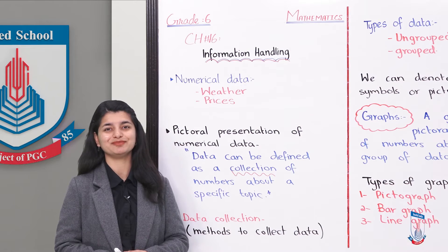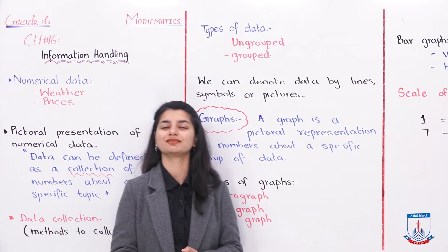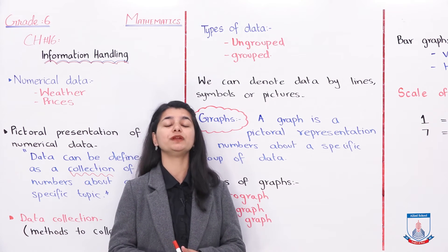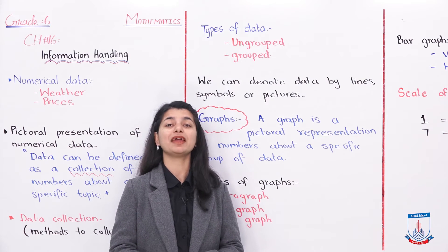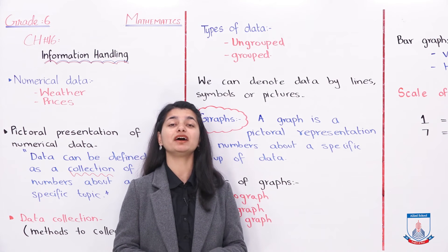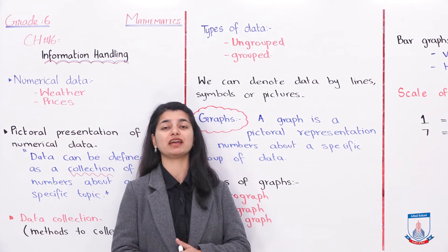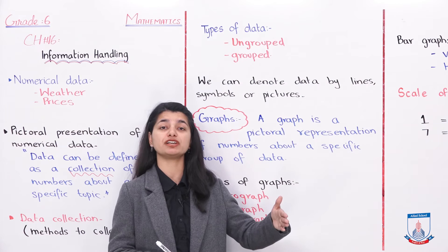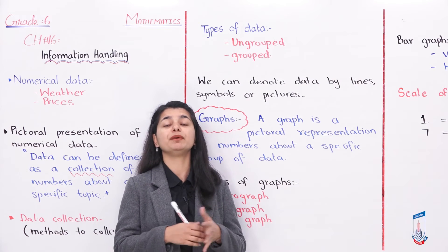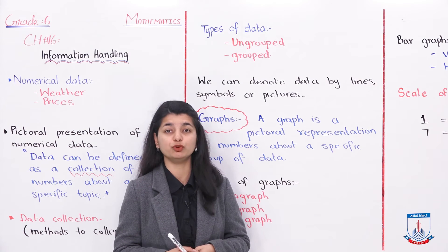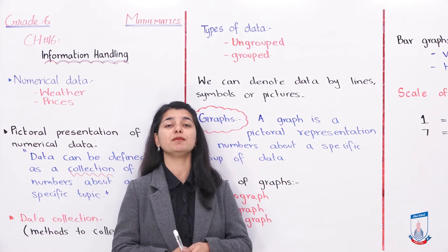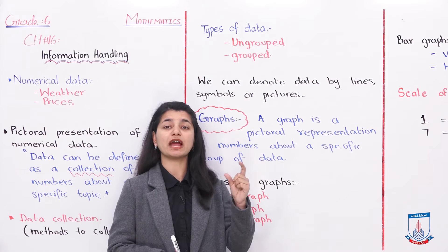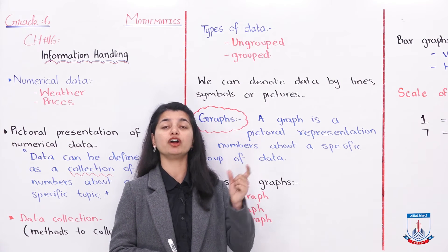Now let's look at types of data. There are mainly two types: ungrouped data and grouped data. You can refer to your textbook page 207. There you can see an example of ungrouped data where names of countries are just listed as-is: Malaysia, China, Iran, Afghanistan — completely separate with no categorization. When you look at grouped data on page 207, Malaysia appears three times, China appears six times, and so on. You write all the data together and group it — Malaysia is six, China is three, and so on.